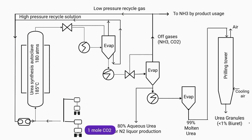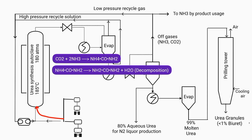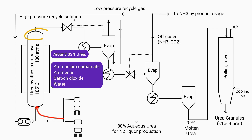First of all, carbon dioxide and ammonia are compressed by the compressor and sent to the urea synthesis autoclave. Here, carbon dioxide and ammonia react with each other, forming ammonium carbonate. Subsequently, the process of decomposition occurs, wherein ammonium carbonate breaks down, resulting in the formation of urea. The solution obtained from the autoclave contains approximately 33% urea, while the remainder consists of unreacted ammonium carbonate, ammonia, carbon dioxide, and water.